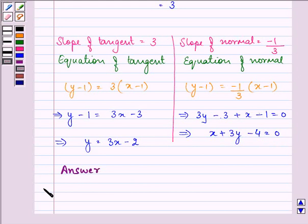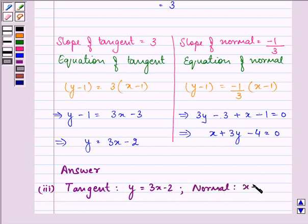the answer to this part, that is the third part, we have equation of the tangent as y equals 3x minus 2, and normal as x plus 3y minus 4 equals 0.